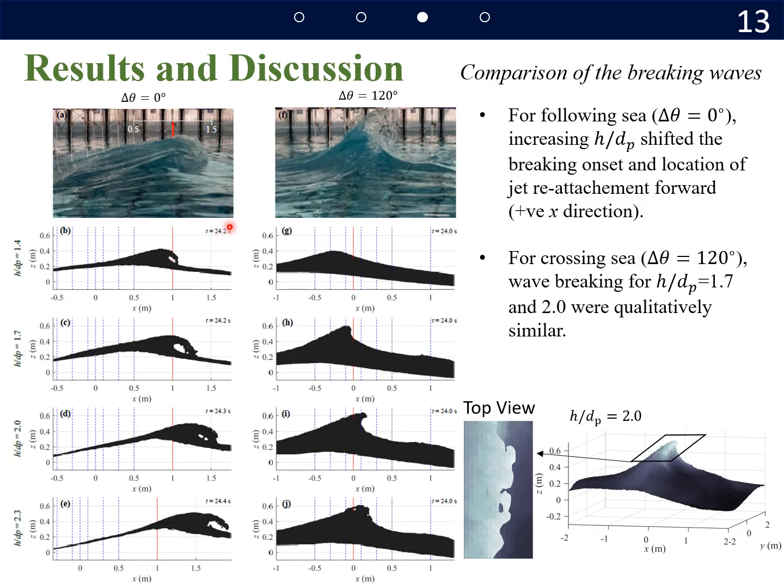So to assess appropriate h/dp values, we compare still images captured in the experiment to our simulations. Note that wave gauge locations, highlighted by colored lines, are aligned so as to correspond to those in the MC19, as we can see here.